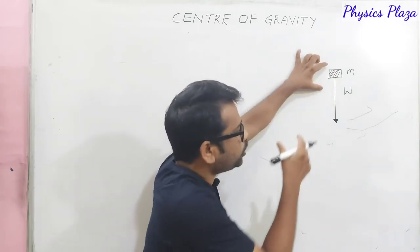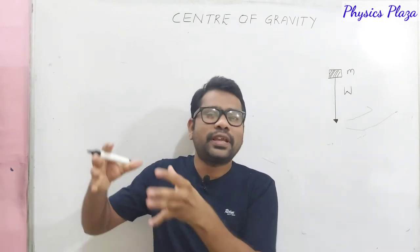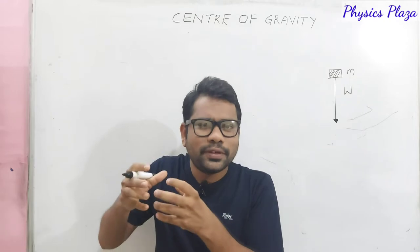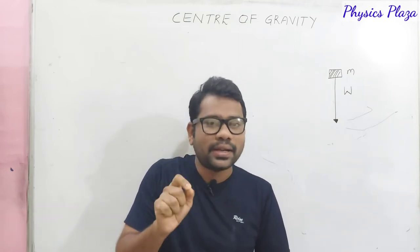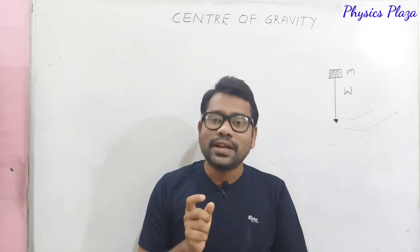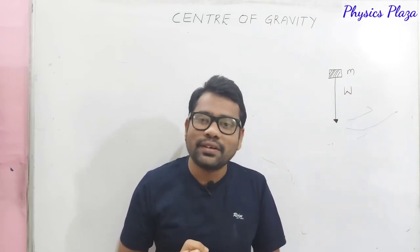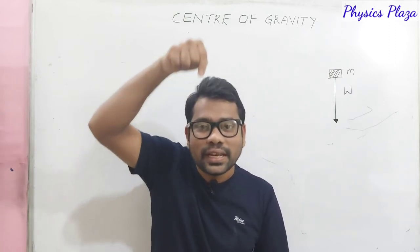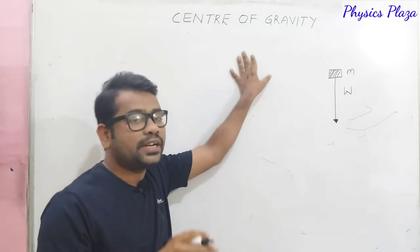Now dear children, an object is made up of atoms — particles. Each and every particle has some mass. As each and every particle has some mass, definitely each and every particle is pulled by gravity. As each and every particle is pulled by gravity, each and every particle has some weight which acts vertically downwards. This is a basic point in order to understand what actually center of gravity is.